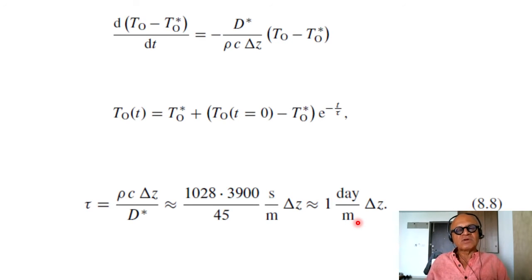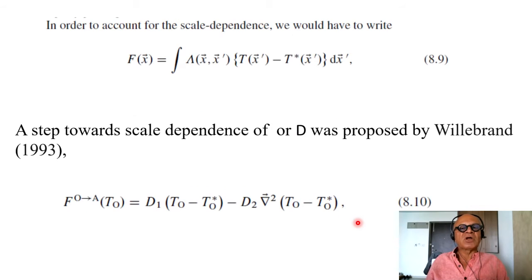So that scale dependence has to be taken into account and Willebrand tried to do that. But first, in order to account for the scale dependence, we would have to write the flux as dependent on X, the spatial variable, where you integrate some parameter lambda X, X prime times T X prime minus T star. So we are just using dummy variable here. That temperature difference is going to depend on integrating over space with some coefficient, but it's not at all easy to estimate these.